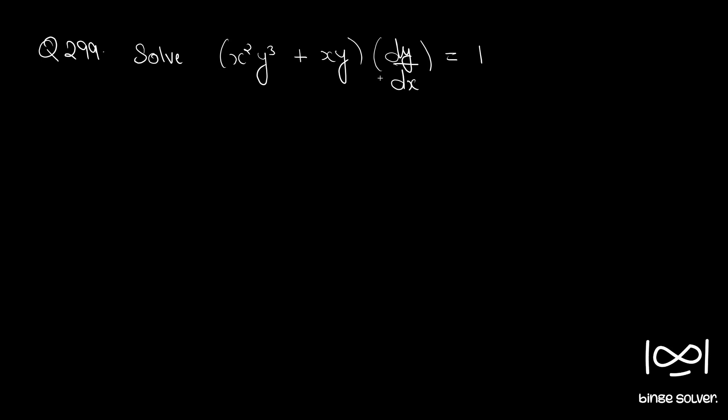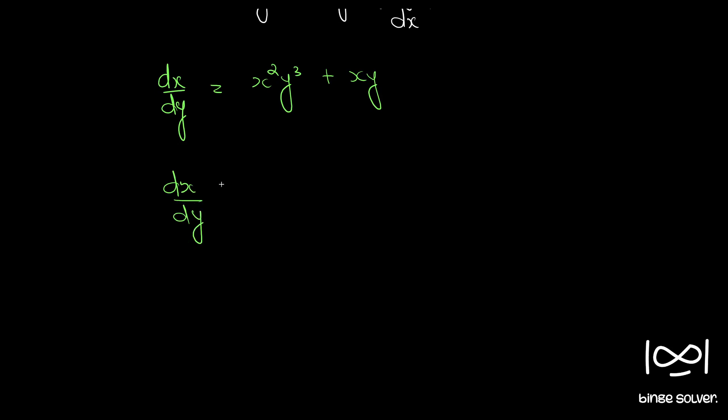As you can see, if we extract dy by dx from this it becomes a fraction. So we are going to take dx by dy instead. dx by dy equal to x square y cube plus xy. Rearranging, we have dx by dy minus xy is equal to x square y cube.